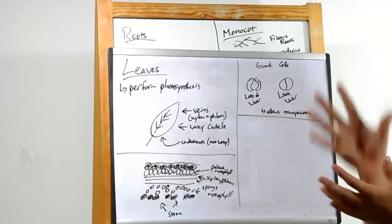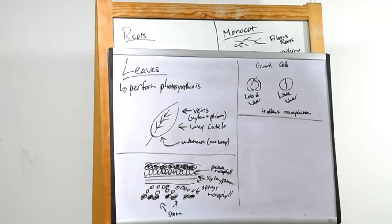But here's the trouble. Water can also evaporate through these. Let's see how that works. See, the openings known as stoma, stomata plural, have these guard cells.